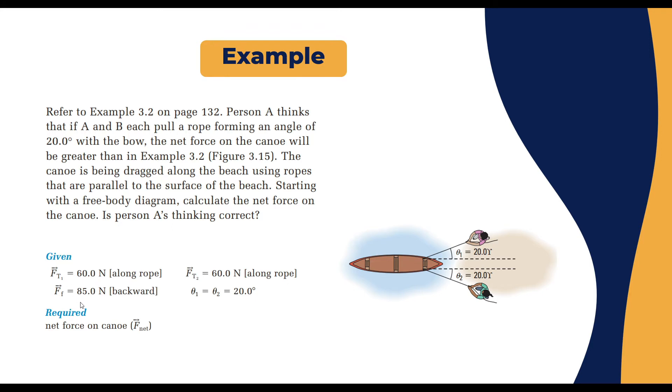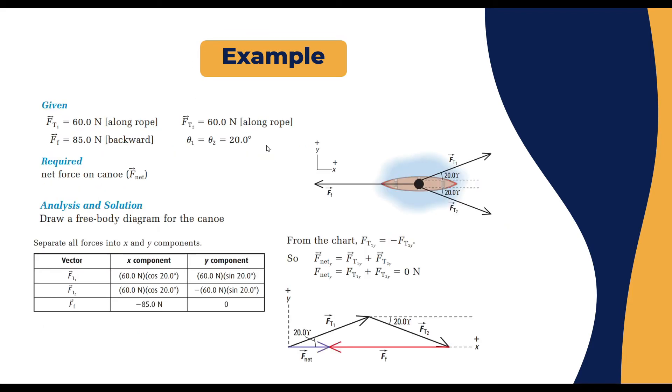The friction force is 85 newtons pulling backward relative to the rope. You have θ₁ = θ₂ = 20°. Find the net force on the canoe which is F_net. First thing we do: create a free body diagram for the forces. So we have the center of the object which is the canoe. We have the friction force going backwards and we have F_T1 with an angle of 20 degrees from the x-axis. We have F_T2 with an angle of 20 degrees in the fourth quadrant relative to the x-axis. So we drew the free body diagram.